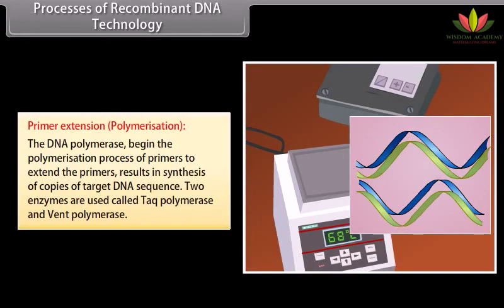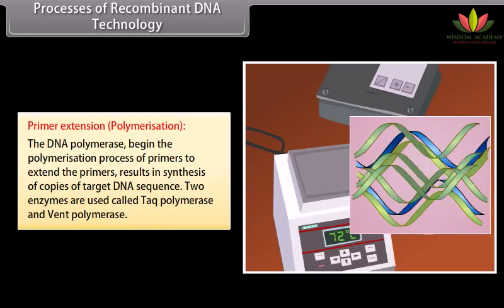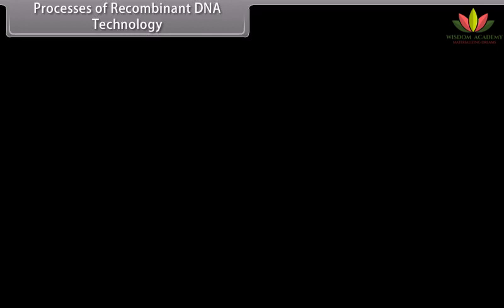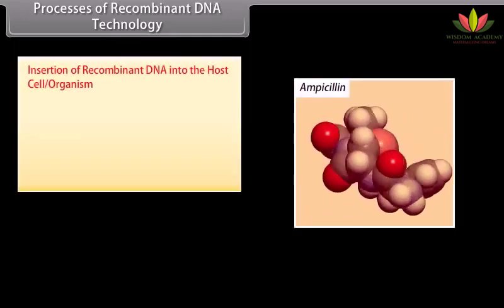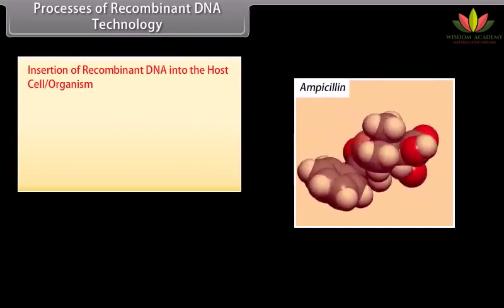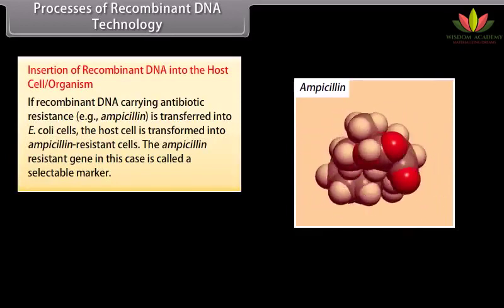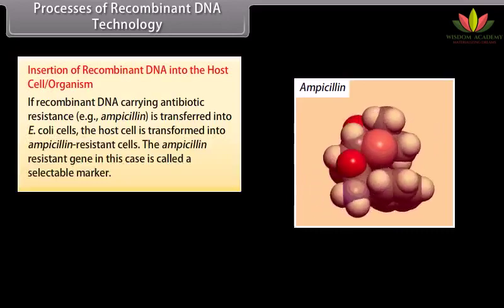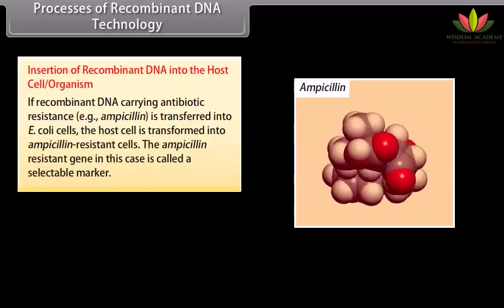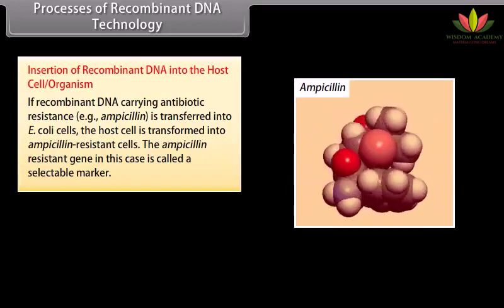Primer extension — polymerization: the DNA polymerase begins the polymerization process; extending the primers results in synthesis of copies of the target DNA sequence. Two enzymes used are Taq polymerase and Vent polymerase. Insertion of recombinant DNA into the host cell or organism. If recombinant DNA carrying antibiotic resistance — that is, ampicillin — is transferred into E. coli cells, the host cell is transformed into ampicillin-resistant cells. The ampicillin resistance gene in this case is called a selectable marker.